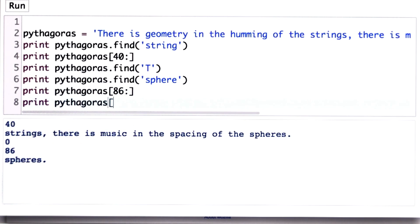If we search for a string that's not in the string that we're using as the search string. So let's look for, say, algebra, which was not in the quote from Pythagoras. We get the output negative one. That means the string was not found.